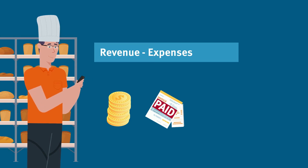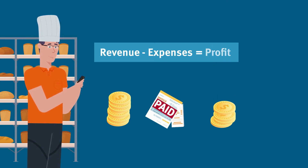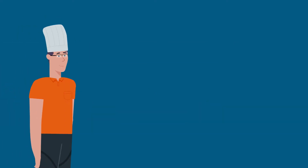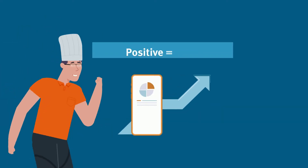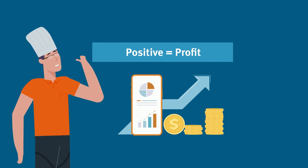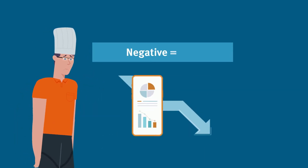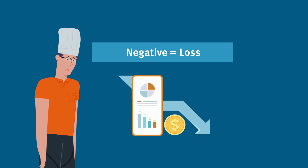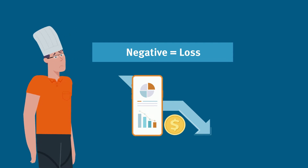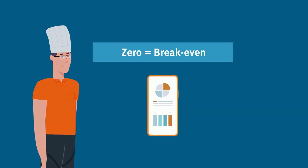Once these are paid, what is left over is your profit. If your profit is a positive number, congratulations — you're making a profit. If your profit is a negative number, you're making a loss. And if it's zero, you're only making enough money to break even.